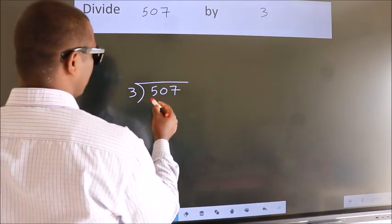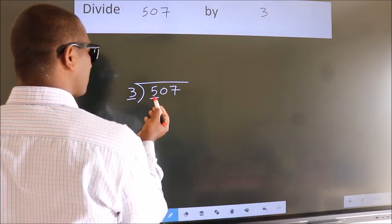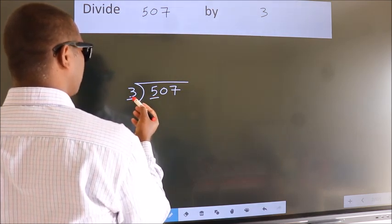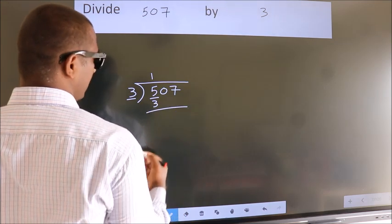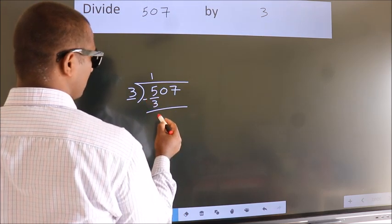Here we have 5, here 3. A number close to 5 in the 3 table is 3 once, which is 3. Now we subtract and get 2.